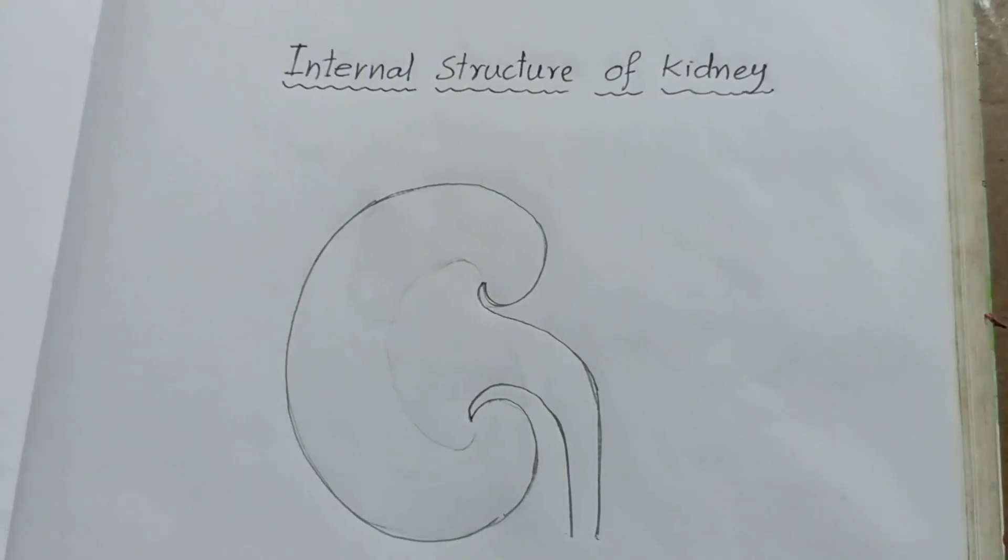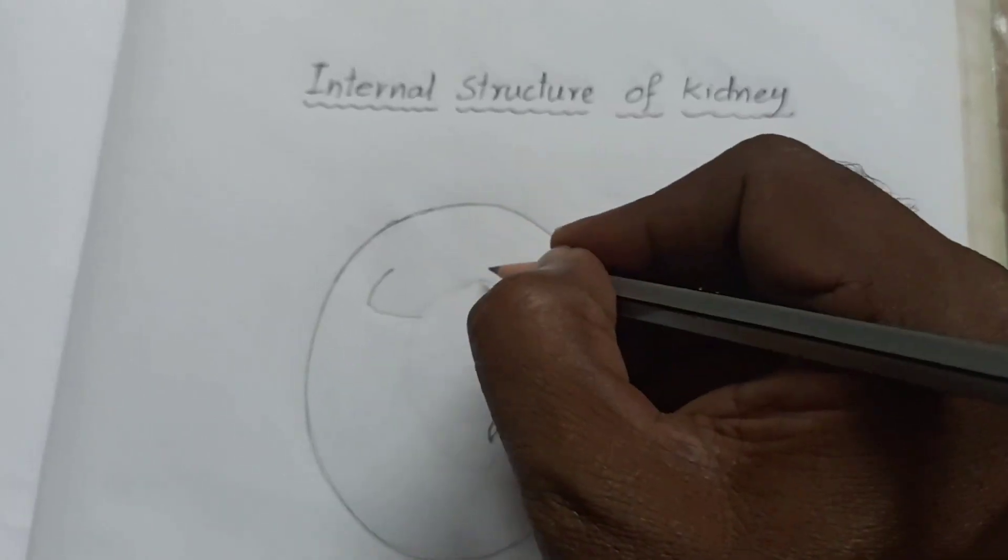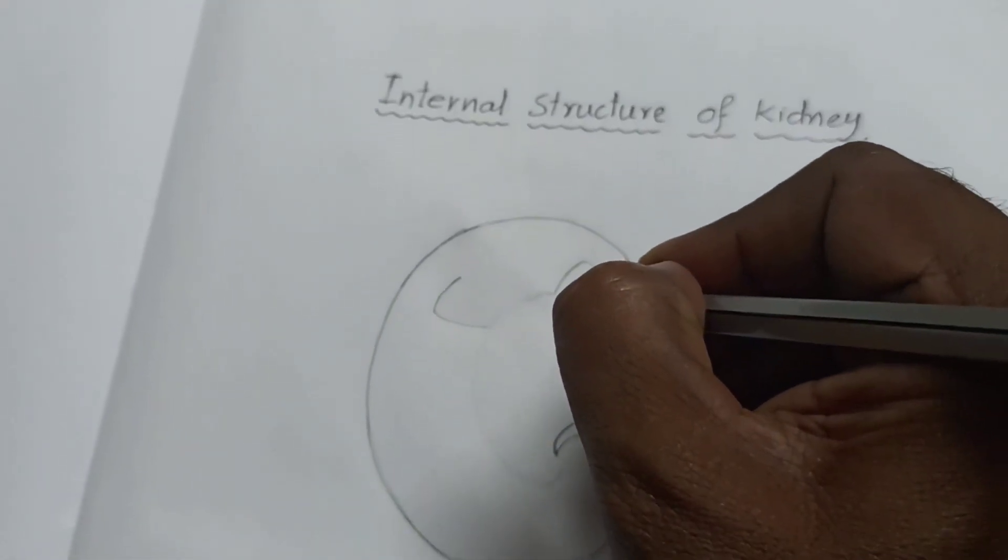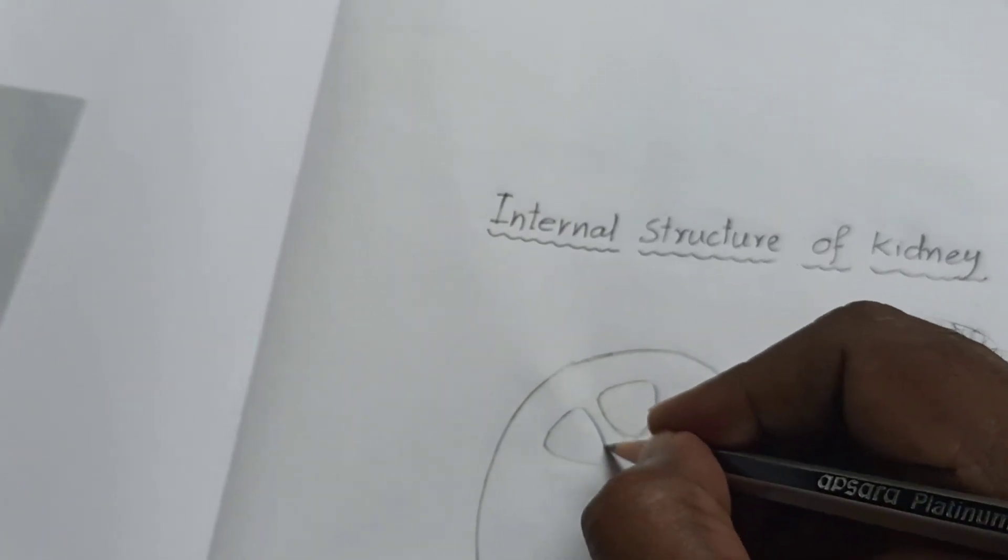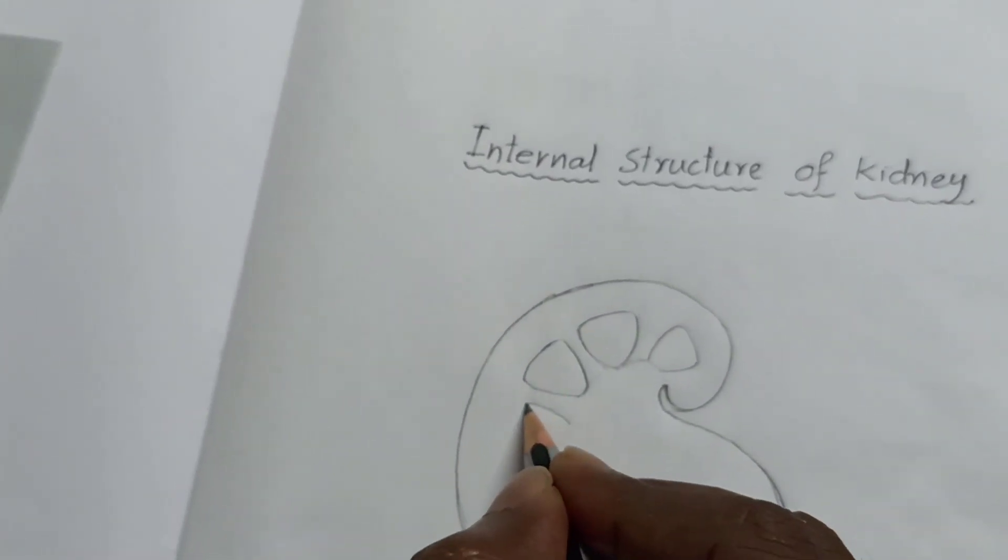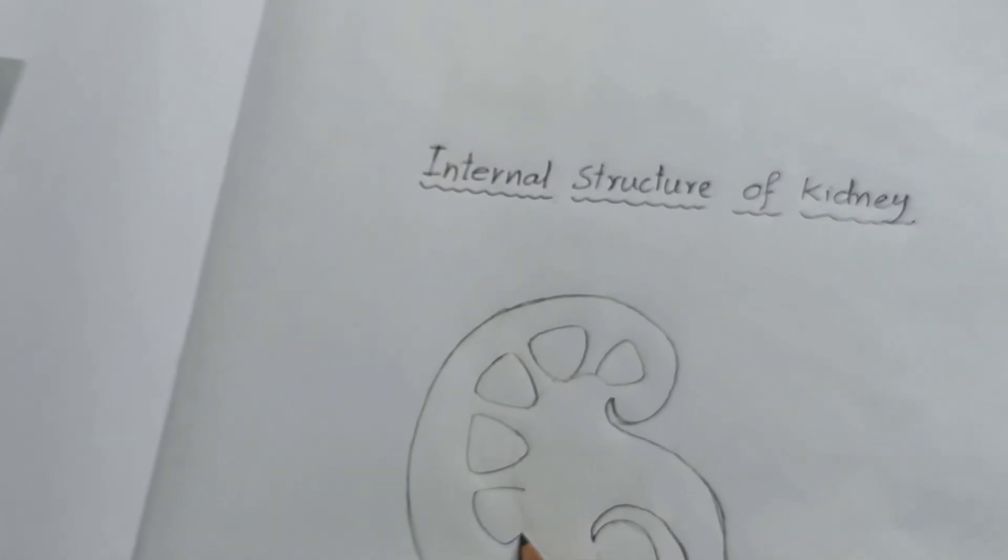Draw like this to show the middle of the pale inner zone. The outer dark zone is known as cortex. Now I am drawing medulla like this. You have to draw like this.